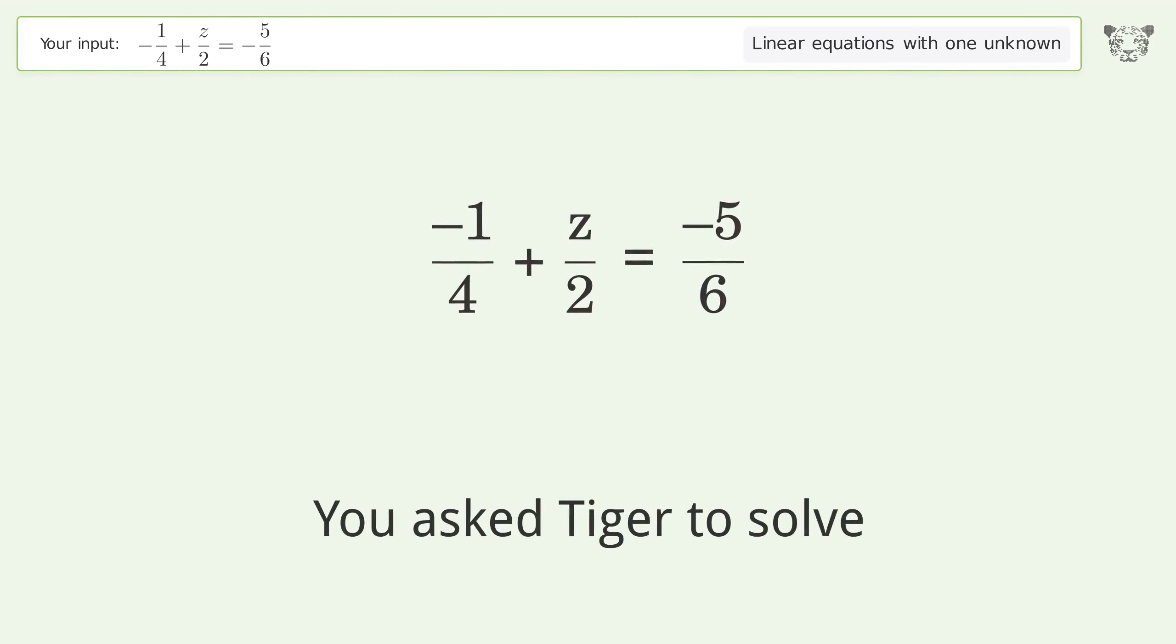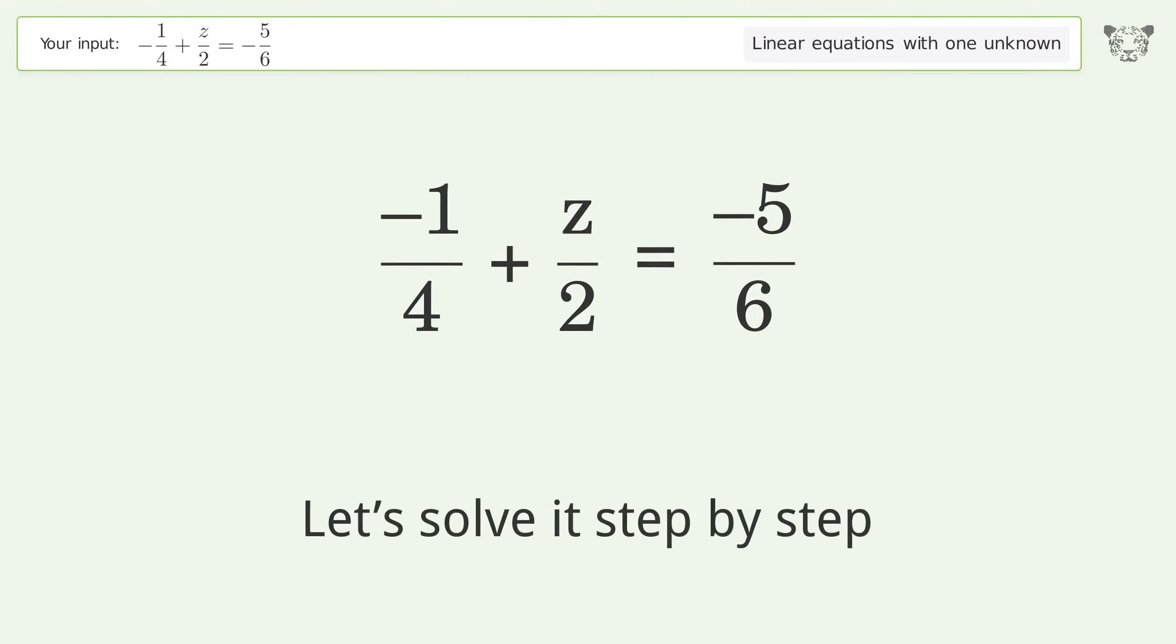You asked Tiger to solve this linear equation with one unknown. The final result is z equals negative 7 over 6. Let's solve it step by step.